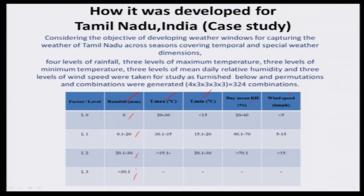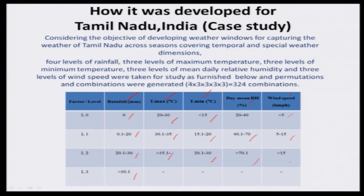The 4 rainfall levels represent the amount of rainfall received in Tamil Nadu across seasons throughout the year: Level 1 is 0 mm (dry level), then 0.1 to 20 mm, then 20.1 to 30 mm, and greater than 30.1 mm. Likewise, 3 levels of maximum temperature, 3 levels of minimum temperature, 3 levels of mean relative humidity, and 3 levels of wind speed were selected. If you multiply 4 rainfall levels × 3 maximum temperature × 3 minimum temperature × 3 RH × 3 wind speed, you get 324 combinations — a permutation and combination exercise — giving 324 weather windows.